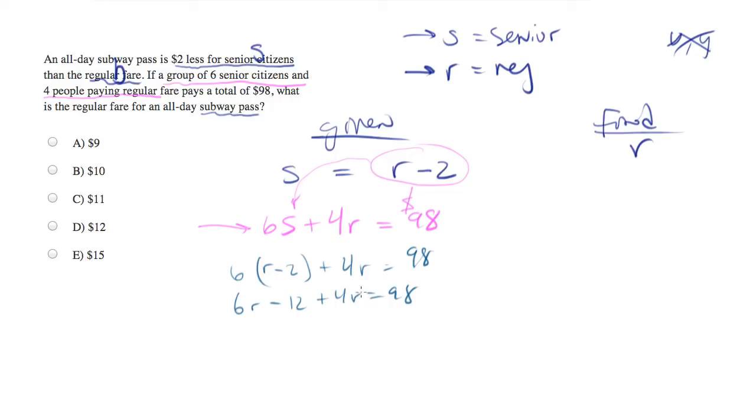Common algebra practice, combine like terms. So we have an R term, so let's add those together. We'll get 10R minus 12 equals 98. Now let's add 12 to both sides of the equation. And we'll end up with 10R equals 110.